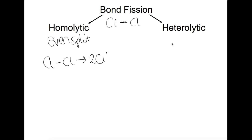In a heterolytic bond split, this is an uneven split to form ions. So here we're forming radicals, and over here we're forming ions.